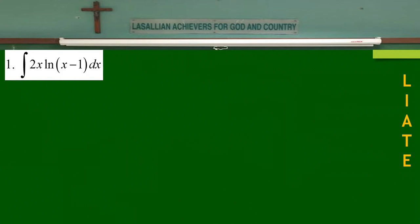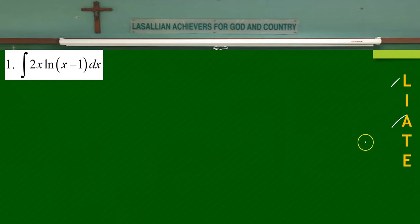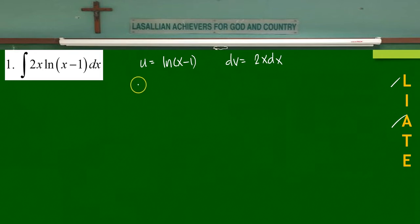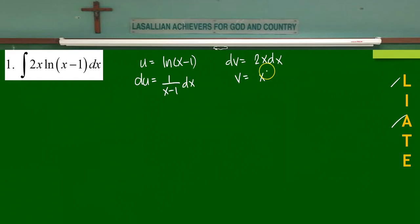For the first example, you have a combination of algebraic (2x) and logarithmic. According to the acronym, since logarithmic comes first, let u equal the logarithmic function ln(x-1), and the dv would be the algebraic portion 2x dx. To complete the parts, we need du and v: du becomes 1/(x-1) dx, and v becomes x squared.